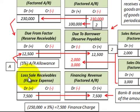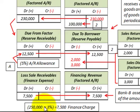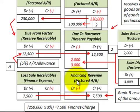The other entry to record is a loss on the sale of receivables — that's the finance expense required by Bank B. Corporation A records this as a loss on sales of receivables, while Bank B records it as financing revenue on those factored accounts receivable. This is calculated as $250,000 times 3% finance charge, giving us $7,500. Corporation A debits loss on sales of receivables for $7,500, and Bank B credits financing revenue for $7,500.